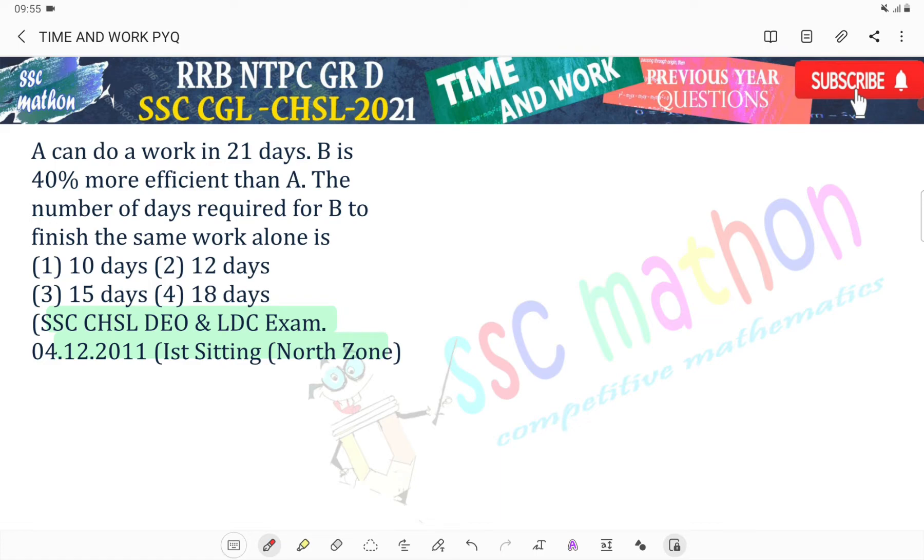A can do a work in 21 days. B is 40% more efficient than A. The number of days required for B to finish the same work - A how many days? 20 days. B how many percent more efficient sir?